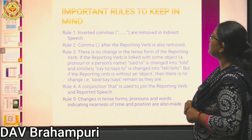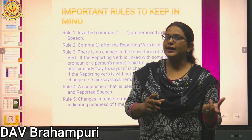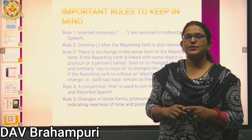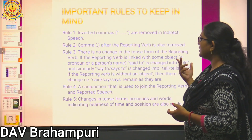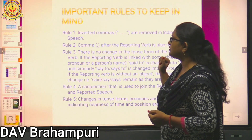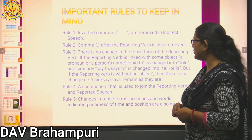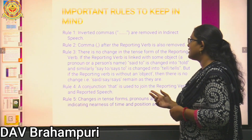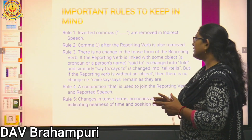Important general rules to keep in mind: First, inverted commas are removed in indirect speech. Second, the comma after the reporting verb is also removed. Third, there is no change in the tense of the reporting verb. If the reporting verb is linked to an object, 'said to' changes to 'told,' and 'says to' changes to 'tells.' But if the reporting verb is without an object, said, say, and says remain as they are.